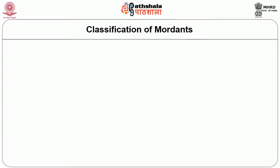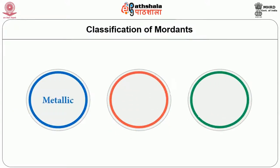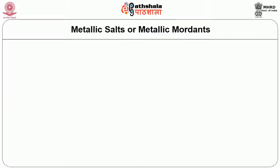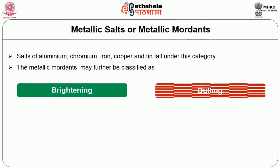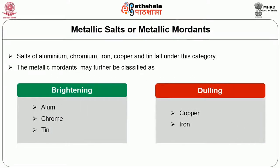Mordants are classified into three categories: metallic, tannins and oil type. The first category is metallic salts or metallic mordants. Salts of aluminium, chromium, iron, copper and tin fall under this category. Metallic mordants may further be classified as brightening and dulling mordants. Brightening mordants include alum, chrome and tin.